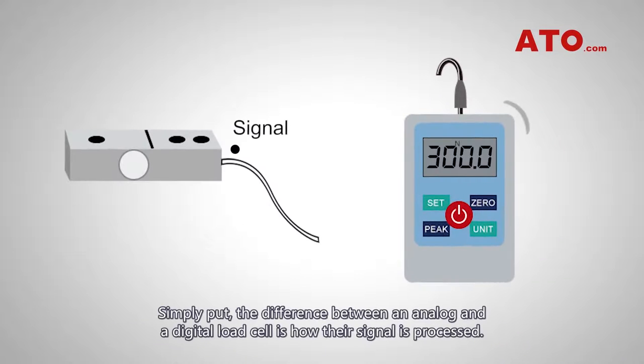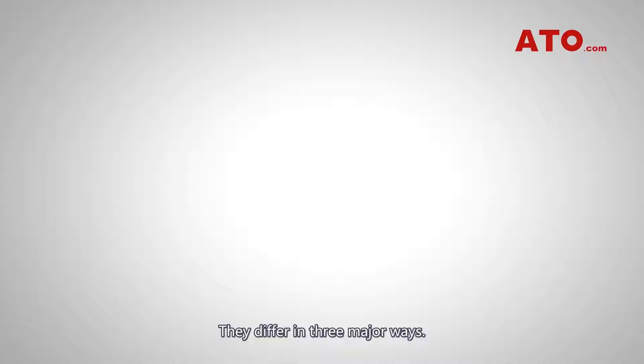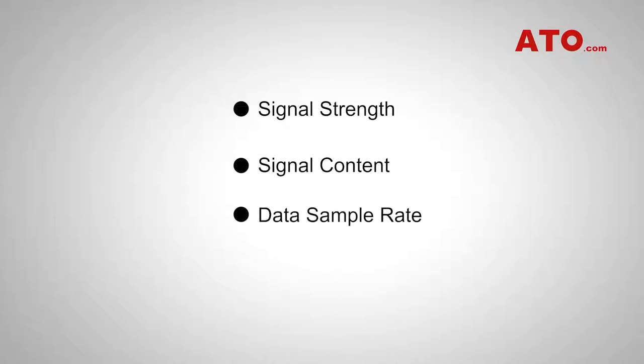Simply put, the difference between an analog and digital load cell is how their signal is processed. They differ in three major ways: signal strength, signal content, and data sample rate.